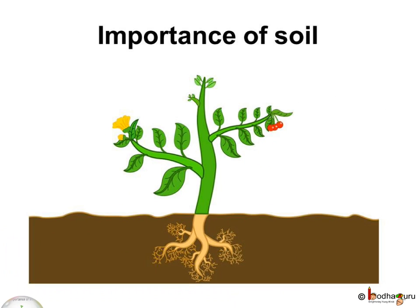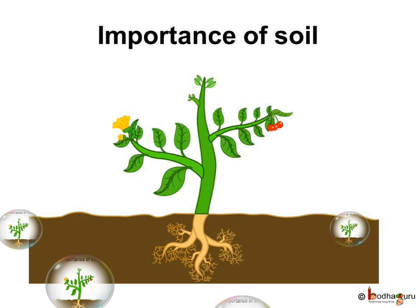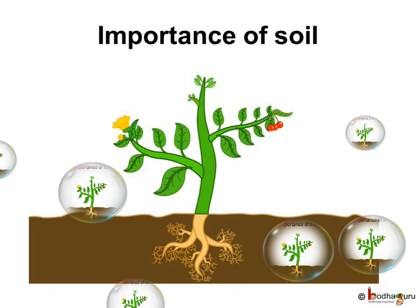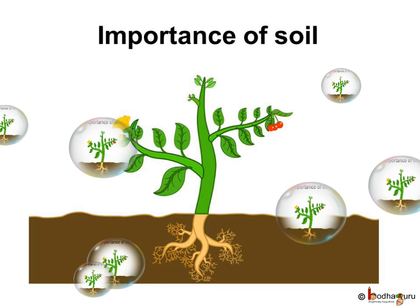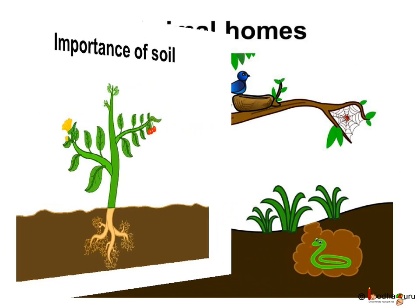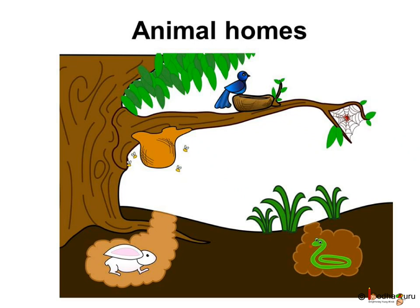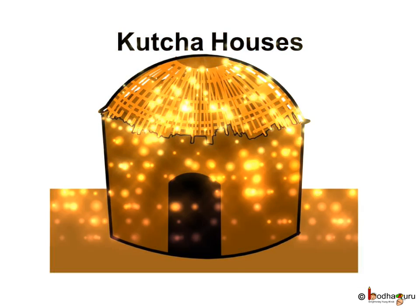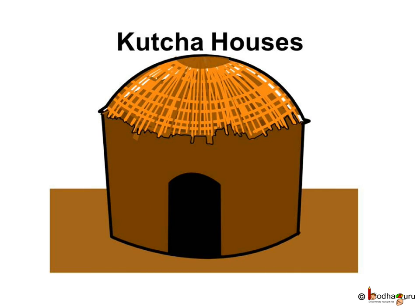So, why is soil necessary? Soil is a necessary element for life as all the plants grow on the soil. We know plants are the primary source of food for all of us. Soil is also the home for many insects and small animals like the rabbit which makes a burrow, or the snake which lives in holes. Some houses like the kaccha houses are also made up of mud or soil.